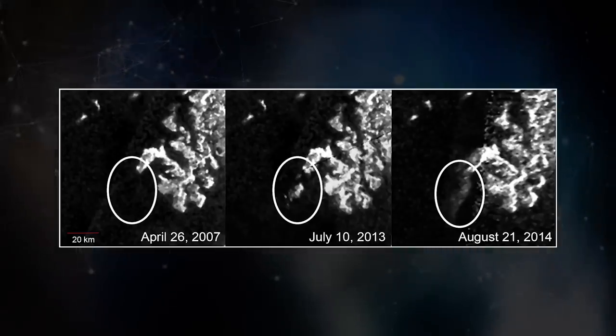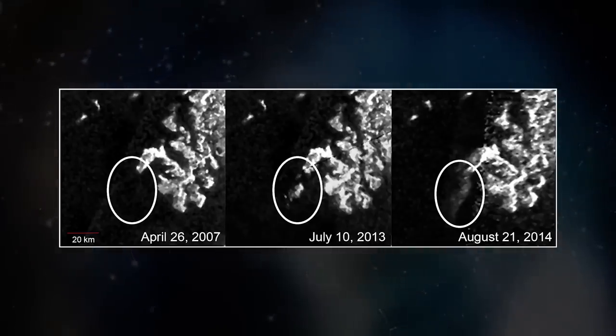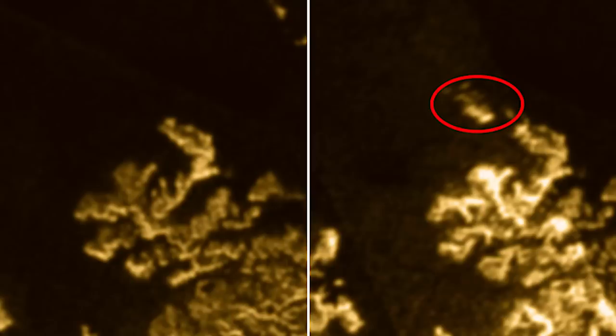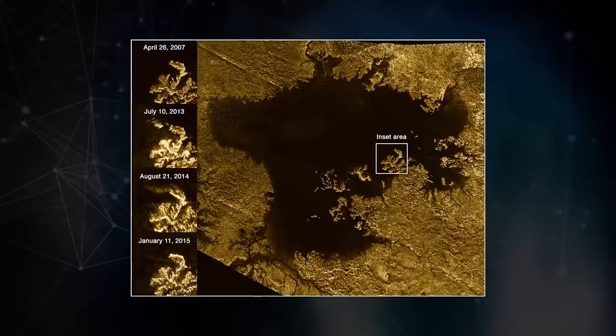Cassini witnessed this island disappear and reappear over time, which can't be explained by tides, sea level, or seafloor changes.